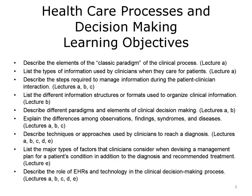The objectives for health care processes and decision making are to describe the elements of the classic paradigm of the clinical process; list the types of information used by clinicians when they care for patients; describe the steps required to manage information during the patient-clinician interaction; list the different information structures or formats used to organize clinical information; describe different paradigms and elements of clinical decision making; explain the differences among observations, findings, syndromes, and diseases; describe techniques or approaches used by clinicians to reach a diagnosis; list the major types of factors that clinicians consider when devising a management plan for a patient's condition in addition to the diagnosis and recommended treatment; and finally, describe the role of EHRs and technology in the clinical decision making process.